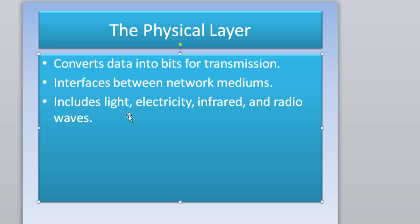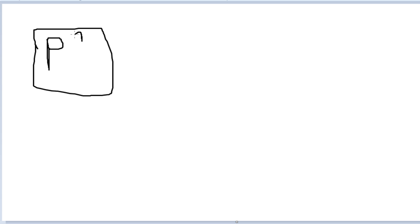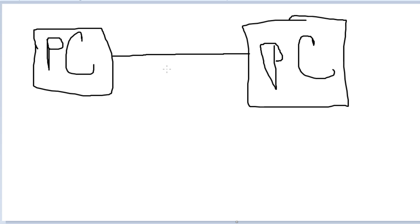Now I want to draw it out and show you what the actual Physical layer looks like. So here we have PC one and PC two, both connected with an Ethernet cable. A ping is basically used when you're trying to communicate or test connectivity between two devices. So we want to ping PC two from PC one.